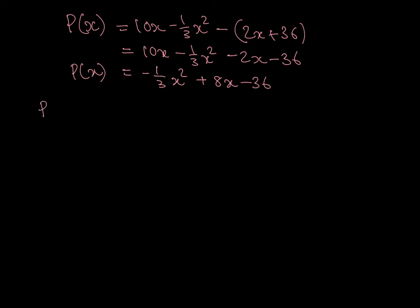Now I need to check that those two quantities actually give me break-even. If I substitute 6 in, that is minus 1/3 times 6 squared plus 8 times 6 minus 36, I get 0. And indeed profit at 6 equals 0. I can check the same for 18, and doing that I again get profit equals 0. So those two quantities do give me break-even.